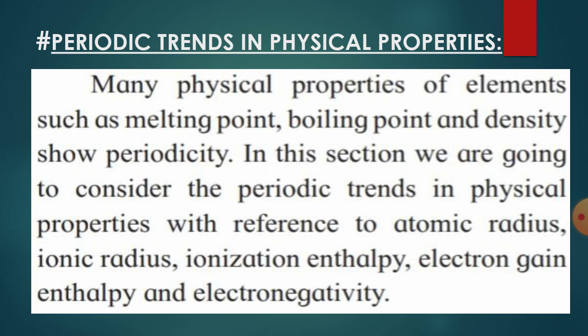Today we are going to study periodic trends in physical properties of elements in the modern periodic table. Many physical properties of elements such as melting point, boiling point, and density show periodicity — the one which is getting repeated after a regular interval of time and period. In this section we are going to consider periodic trends with reference to atomic radius, ionic radius, ionization enthalpy, electron gain enthalpy, and electronegativity.